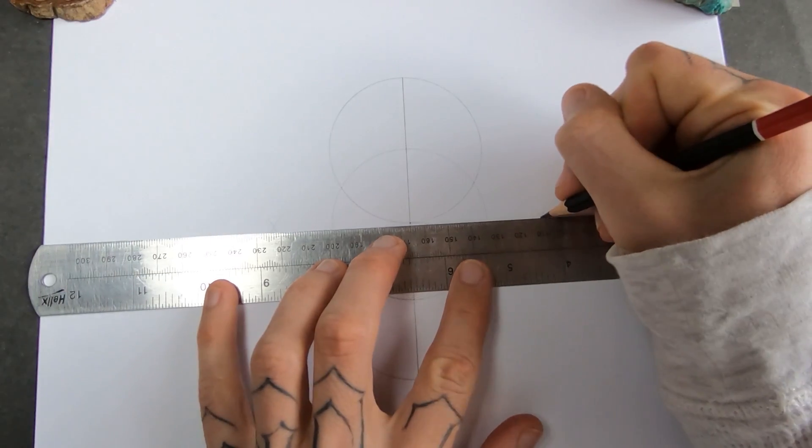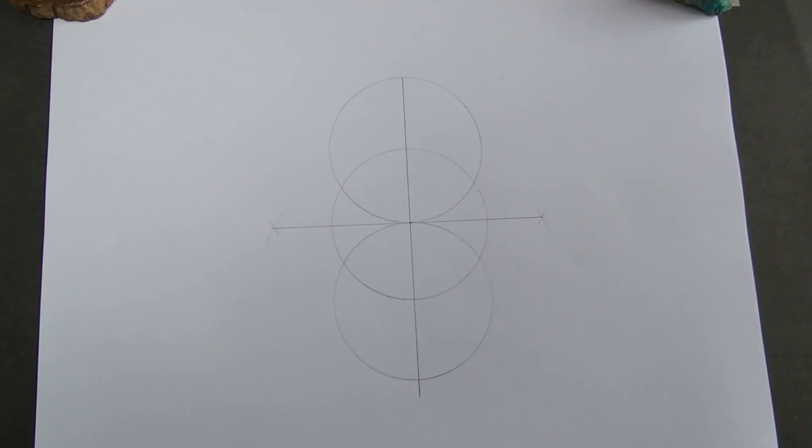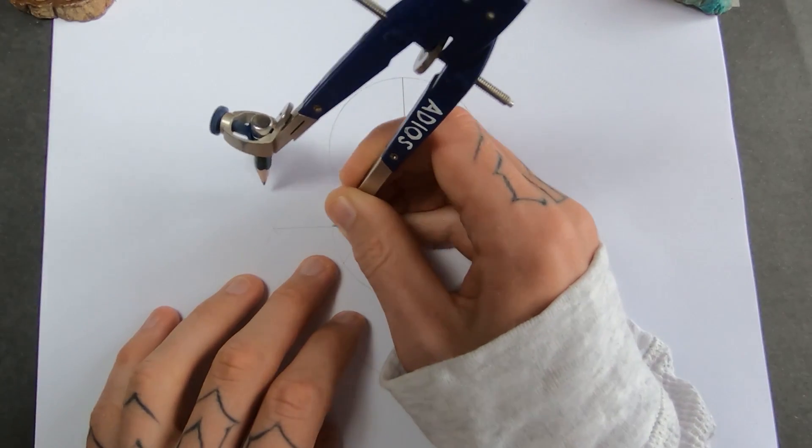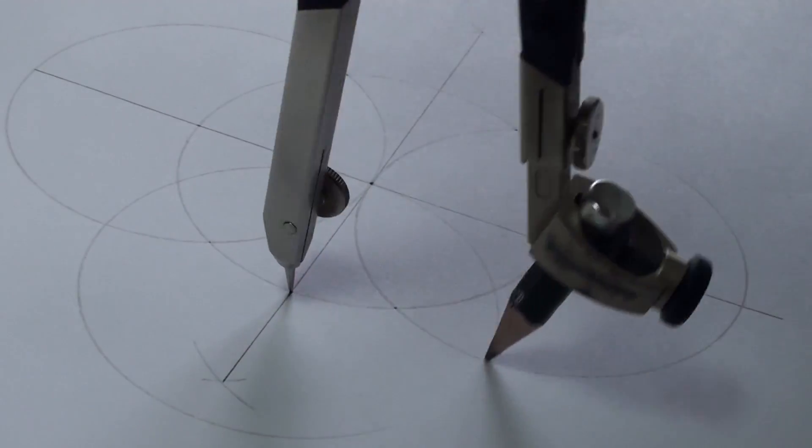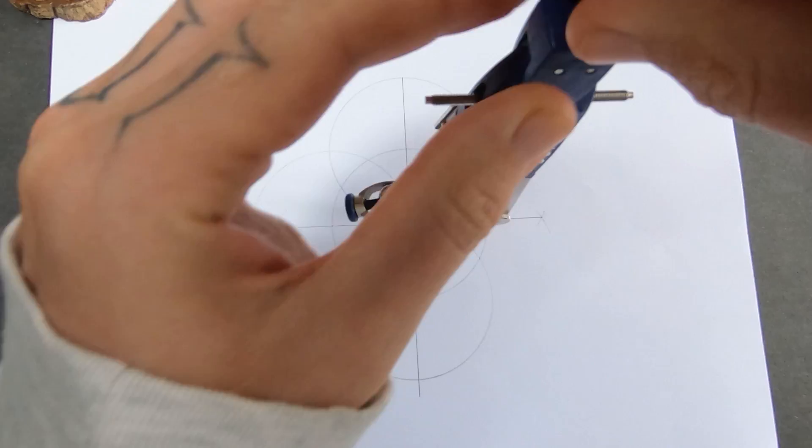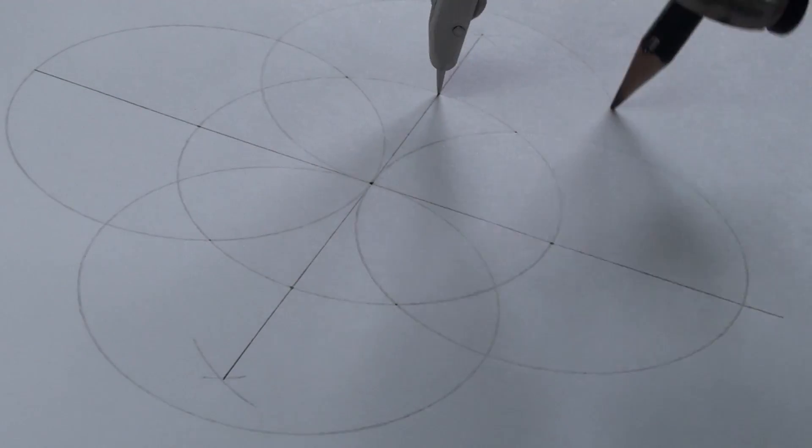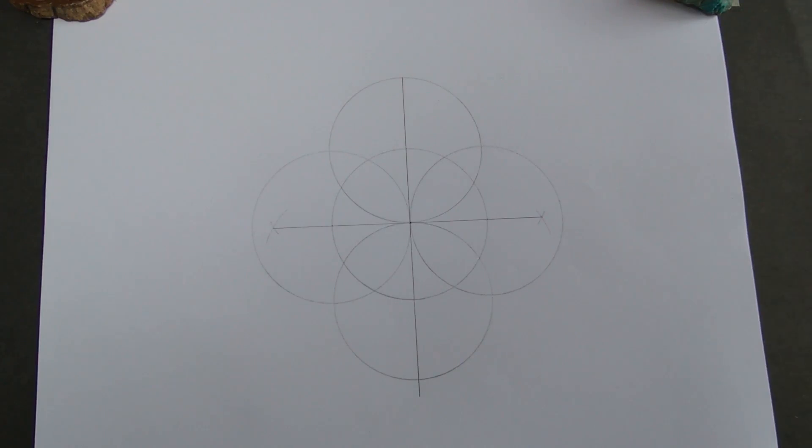And then I'll connect these points through the middle. And there we go, it's divided into 4. And I can now use these points to draw two more circles on the left and right. So that's divided into 4.